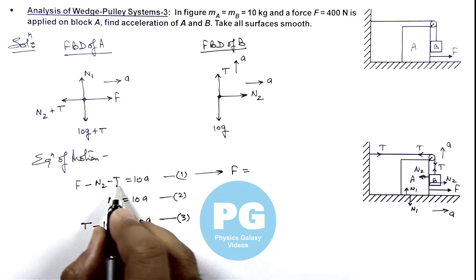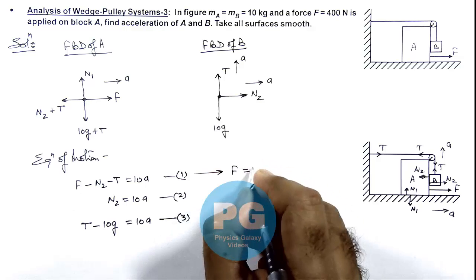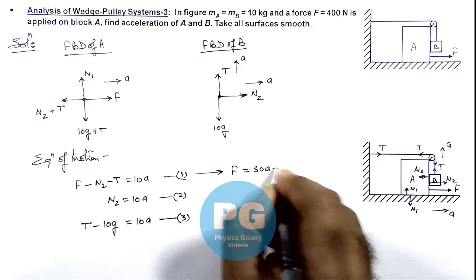And if we substitute the value of T on the right hand side, this will become 30a plus 10g.